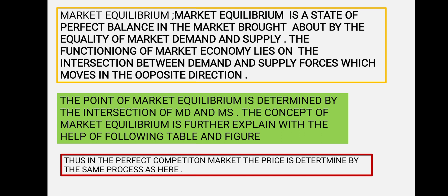Market equilibrium is a state of perfect balance in the market brought about by the equality of market demand and supply. When market demand and market supply are equal, that is market equilibrium. The functioning of a market economy lies on the intersection between the demand and supply forces, which move in the opposite direction. The point of market equilibrium is determined by the intersection of market demand and supply.